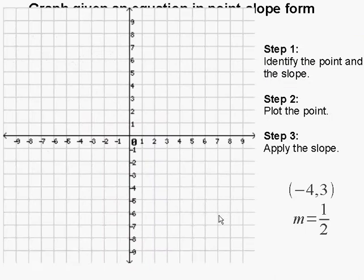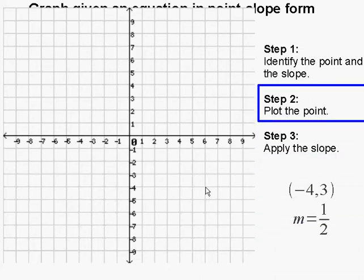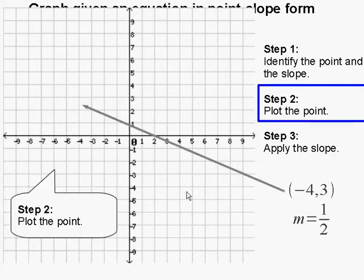The first step in graphing our equation is to plot the point. So negative 4 comma 3 — we're going to plot that point first, right there.